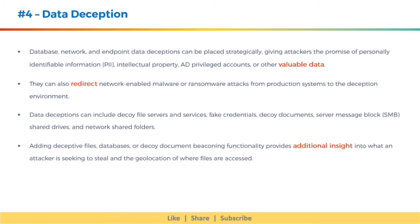The fourth type is data deception. Database, network, and endpoint data deceptions can be placed strategically, giving attackers the promise of personally identifiable information, intellectual property, Active Directory privileged accounts, or other valuable data. They can also redirect network-enabled malware or ransomware attacks from production systems to the deception environment. Data deceptions can include decoy file servers and services, fake credentials, decoy documents, server message block shared drives, and network shared folders. Adding deceptive files, databases, or decoy document beaconing functionality provides additional insight into what an attacker is seeking to steal and the geolocation of where files are accessed.